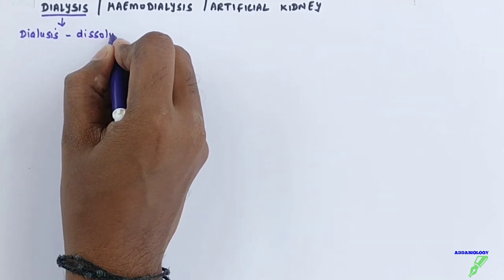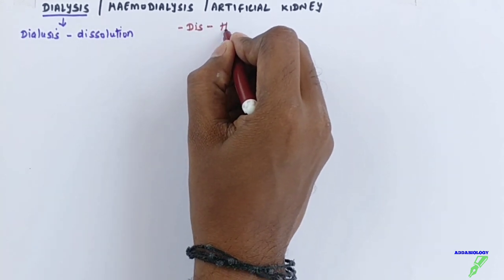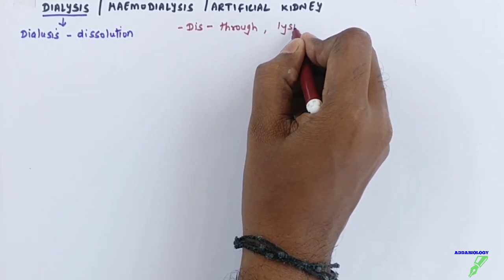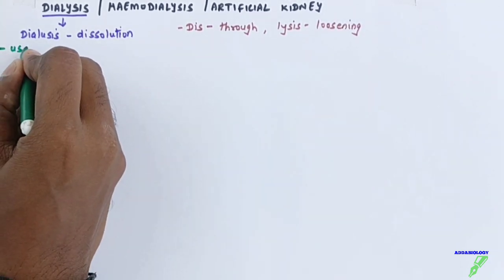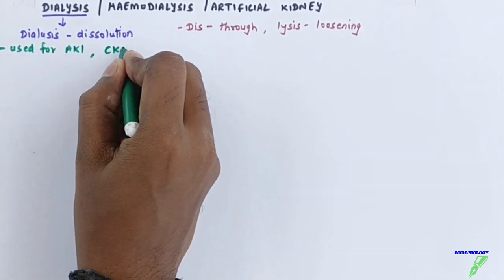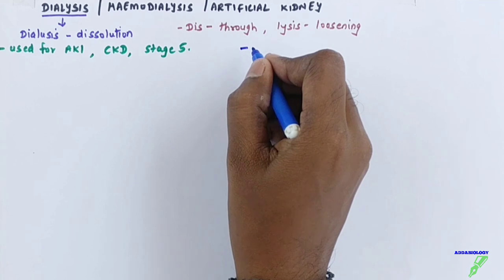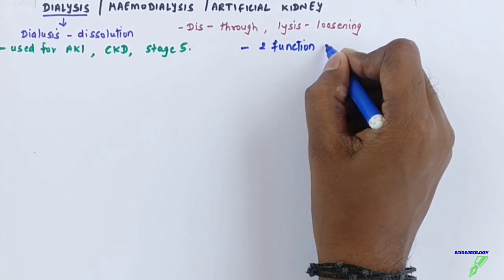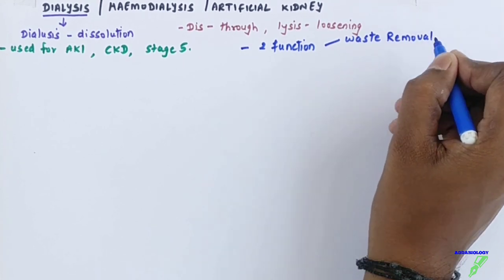The word dialysis means dissolution — 'dia' or 'dis' means through and 'lysis' means loosening. So the blood is loosened up so it can flow out of the body. Dialysis is done when the patient is suffering from AKI (acute kidney injury) or CKD (chronic kidney disease) at stage 5, meaning the kidney has totally stopped working.